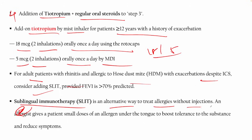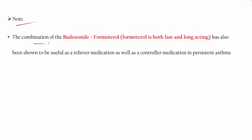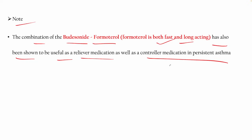Sublingual immunotherapy (SLIT) is an alternative way to treat allergy without injections — allergens give the patient a small dose under the tongue to boost tolerance and reduce symptoms. The combination of budesonide and formoterol is notable because formoterol is both fast and long-acting and has been shown to be useful as both a reliever and controller medication in persistent asthma.